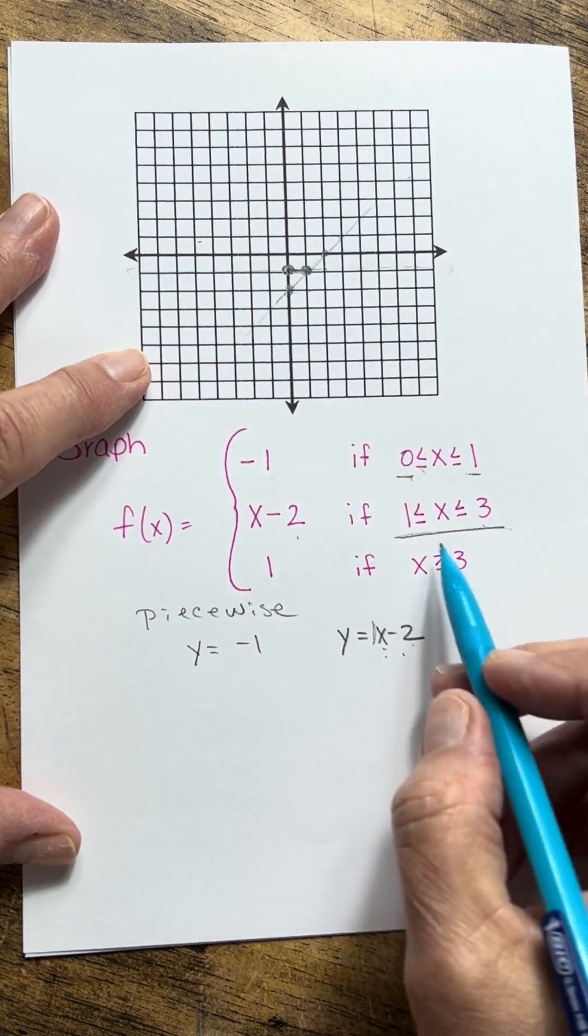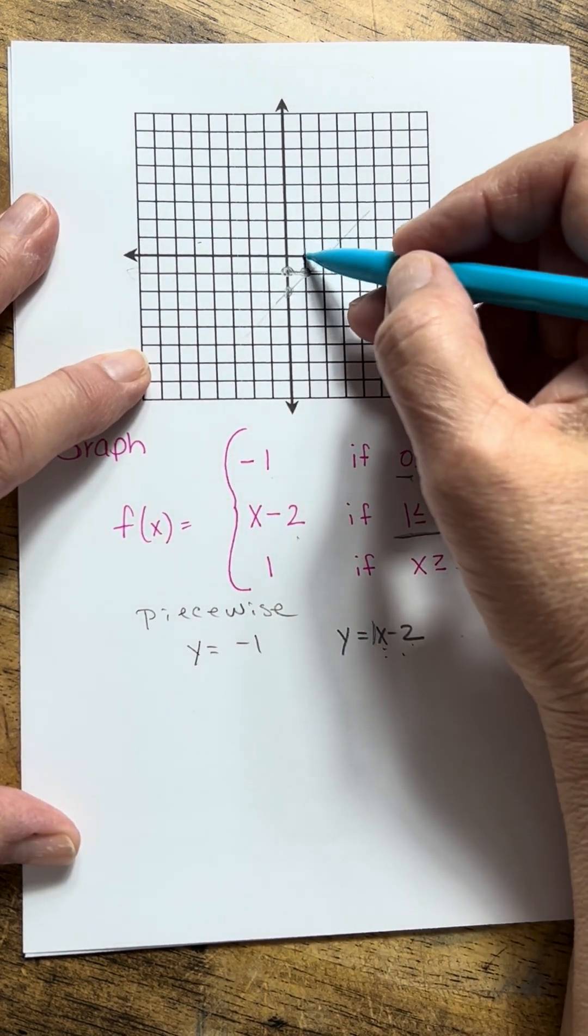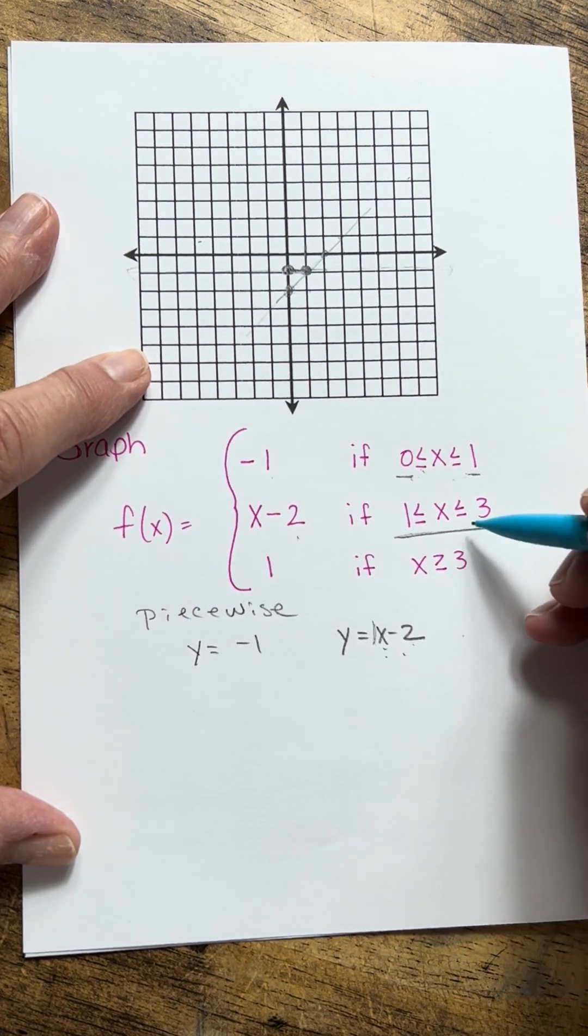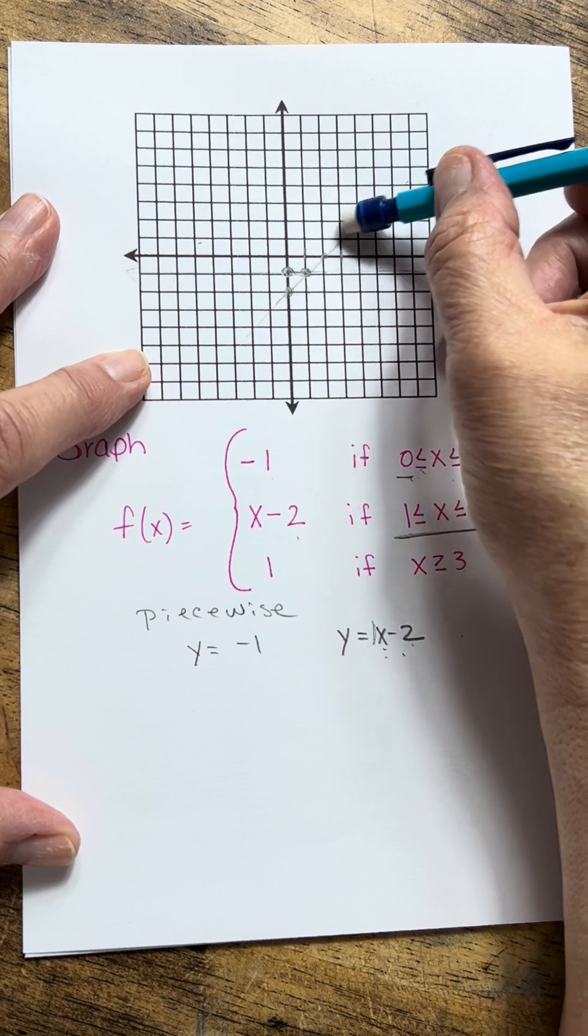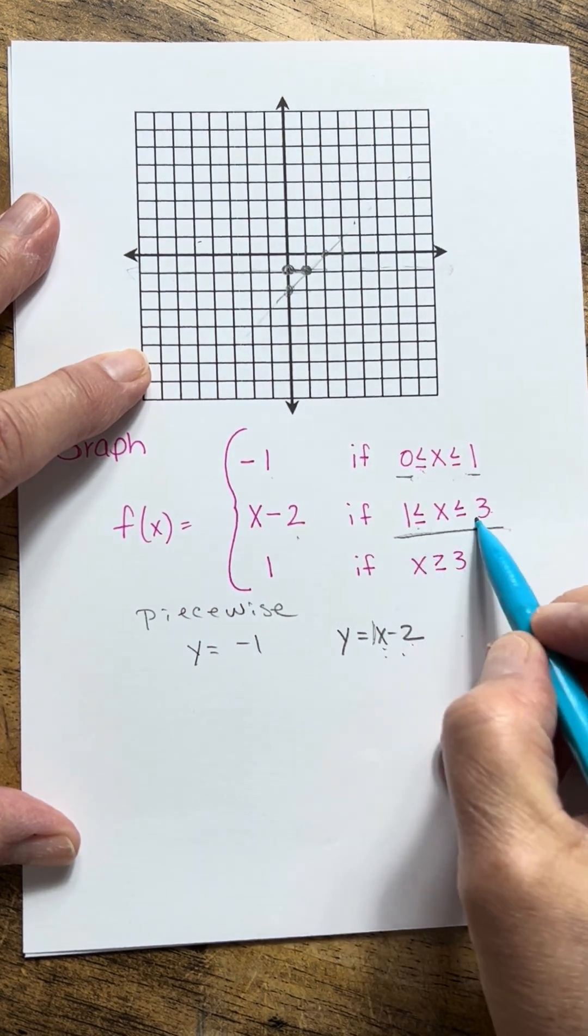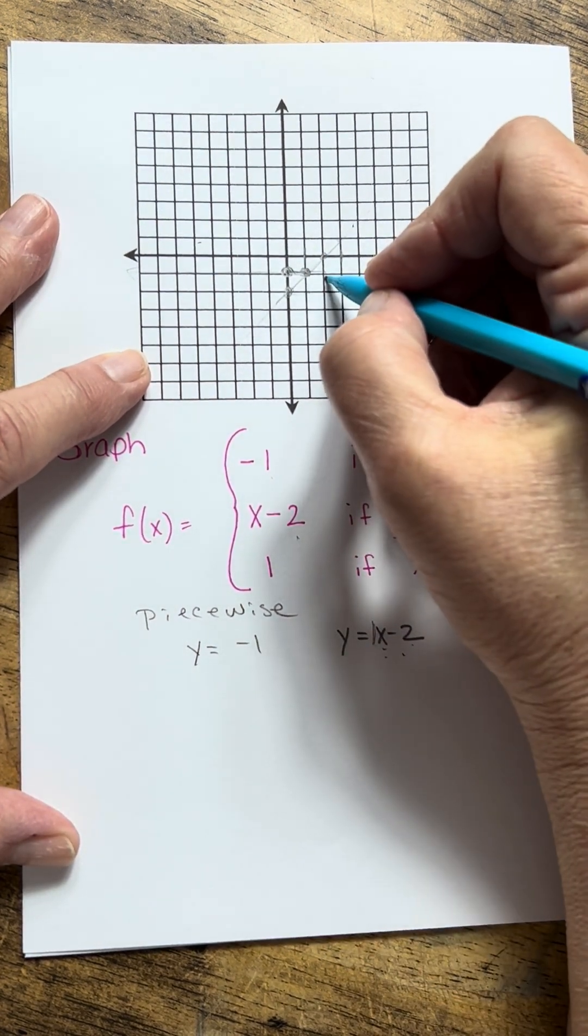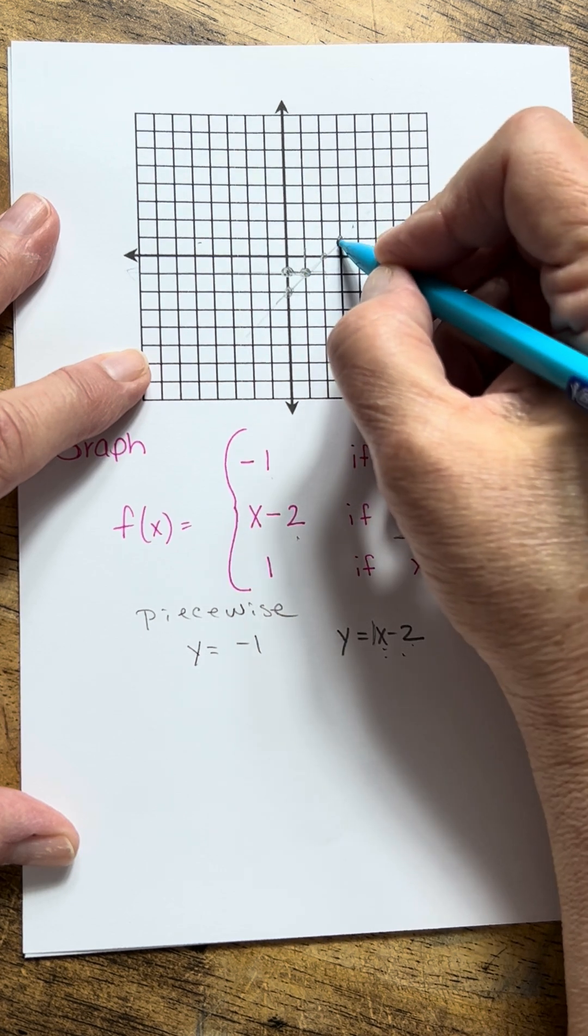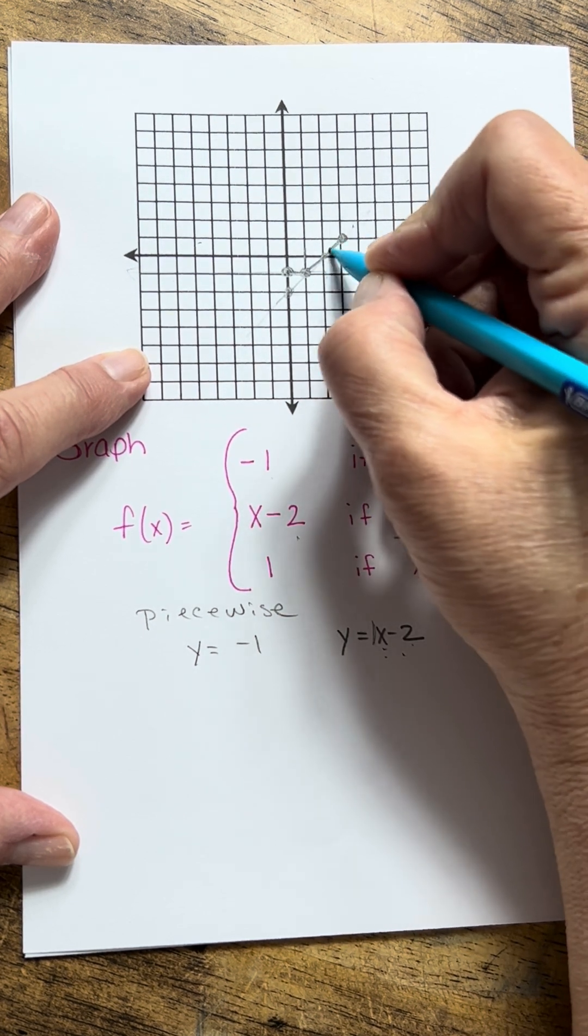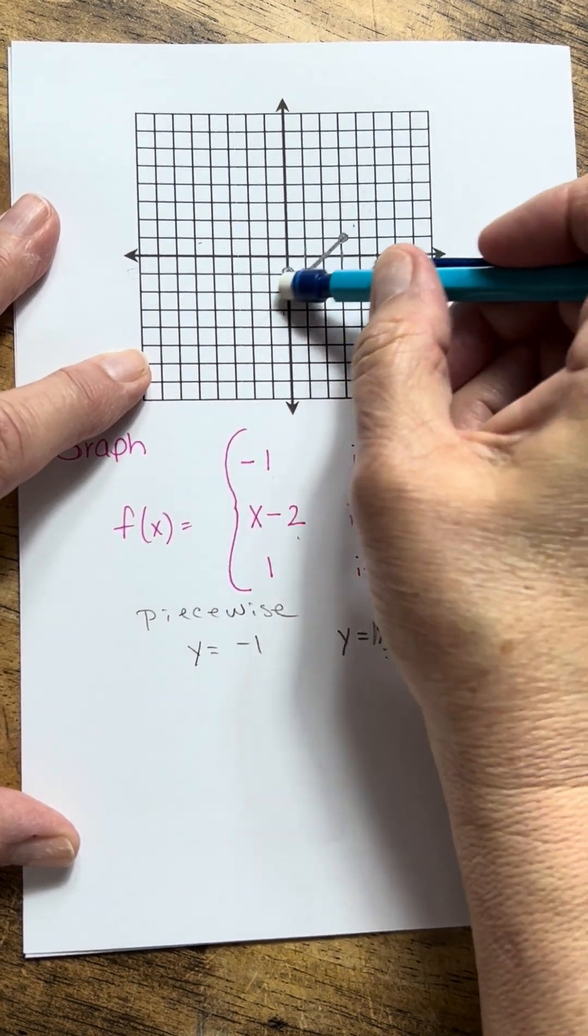Now if I just need the part of the line in between 1, which is right here, and 3, which is right here, I can erase everything else, and it is going to have solid dots at these two points. So I'm going to have a solid dot here and a solid dot here. So there's that part of the line.